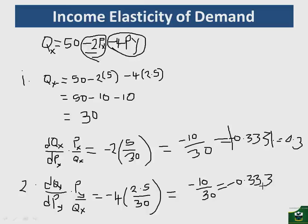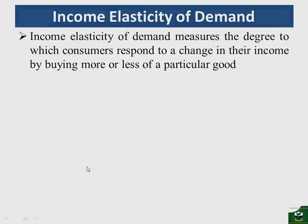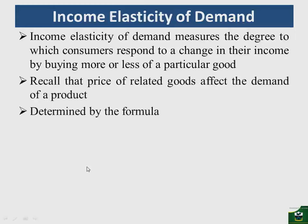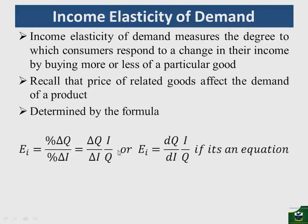Income elasticity of demand measures the degree to which consumers respond to a change in their income by buying more or less of a particular good. It is computed as the percentage change in quantity demanded divided by the percentage change in income — that is, (ΔQ/ΔI) × (I/Q). If you have an equation, take the derivative of the demand function with respect to income and multiply by the ratio of income to quantity demanded.